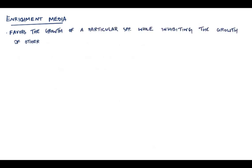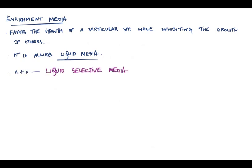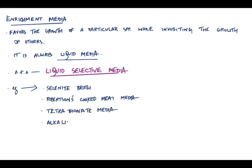It favors the growth of a particular species while inhibiting the growth of others. Remember that it is always a liquid media. Now, looking at the definition, you probably figured out it sounds a lot like a selective media. But remember, selective media is always solid. So this media is also known as liquid selective media. Examples are selenite broth, Robertson's cooked meat media, tetrathionate media and alkaline peptone water.